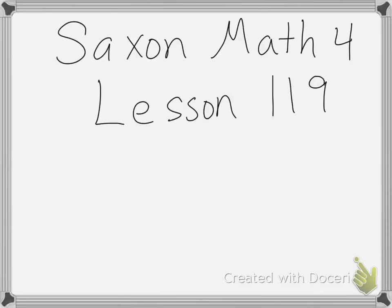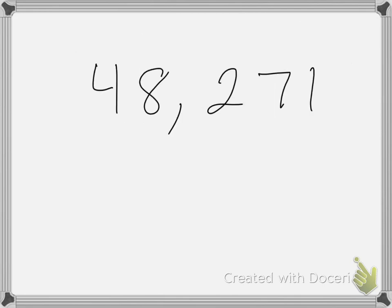Today's lesson is lesson 119: rounding a number to the nearest ten, hundred, or thousand. Here I have the number 48,271. The number one is in the ones place, the seven is in the tens, the two is in the hundreds, the eight is in the thousands, and the four is in the ten thousands place.